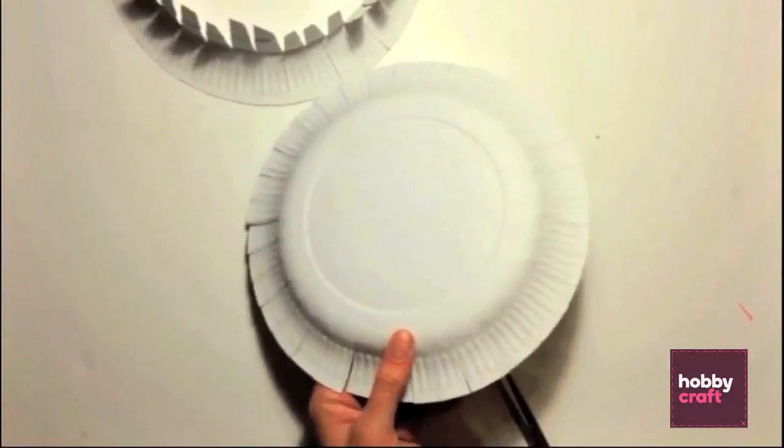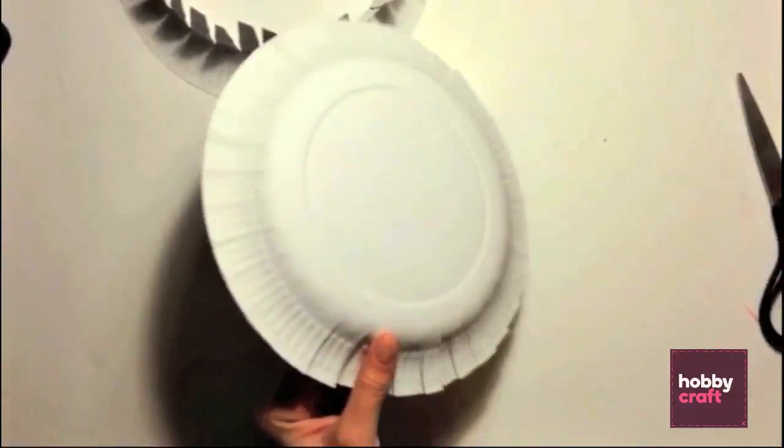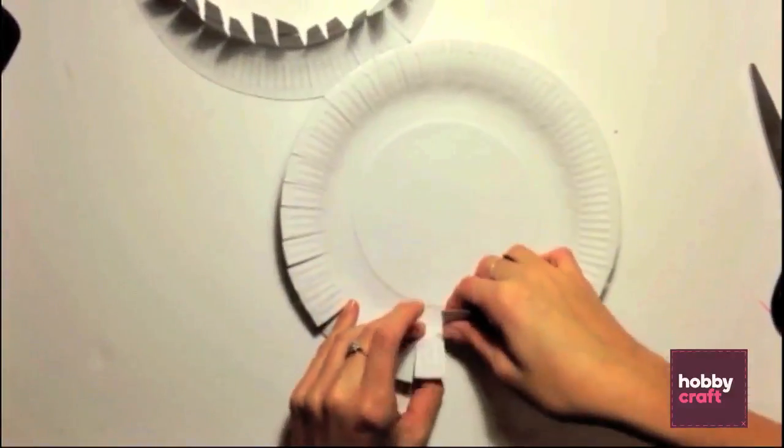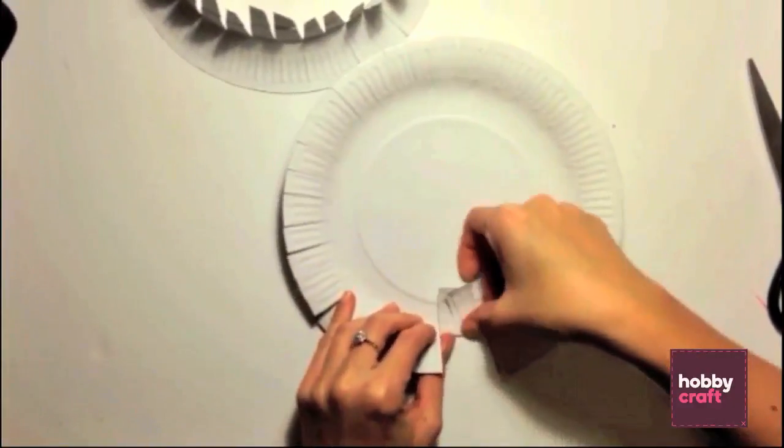Next take your second paper plate and cut round the edge of the rim about a centimetre thick. Fold all these tabs inwards to the centre of the plate.